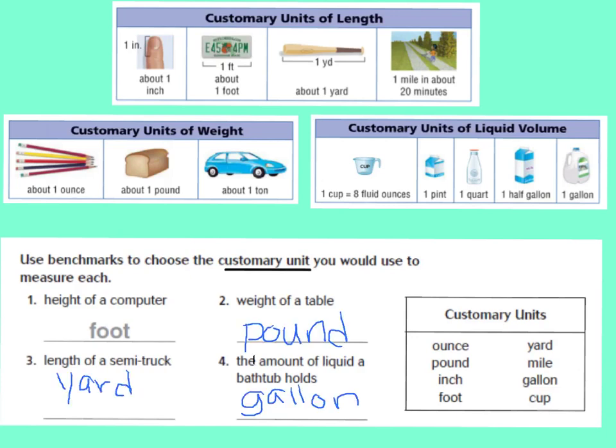Let's go over our answers. To measure the weight of a table, we would use pounds. To measure the length of a semi-truck, you would use yards. And to measure the amount of liquid a bathtub holds, we would use gallons, because a bathtub is really big — and notice that they said liquid, so we would use units of liquid volume.